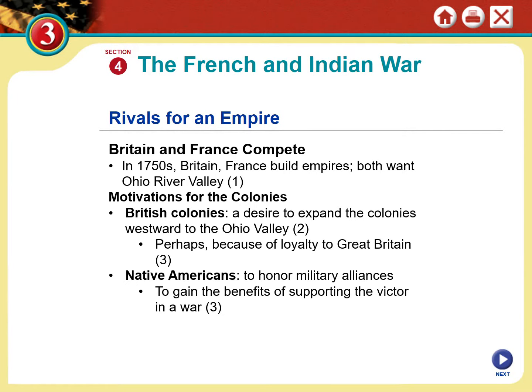We need to understand how this war started and why it involves American history. It is unfortunate that so many colonists came here to escape the endless string of violence that had plagued Western Europe for thousands of years, and yet here they find themselves caught up in conflicts dating back centuries. Throughout the 1750s, Britain and France were busy building empires in the New World. Both were fighting over the Ohio River Valley and both wanted to expand their empires into that territory.